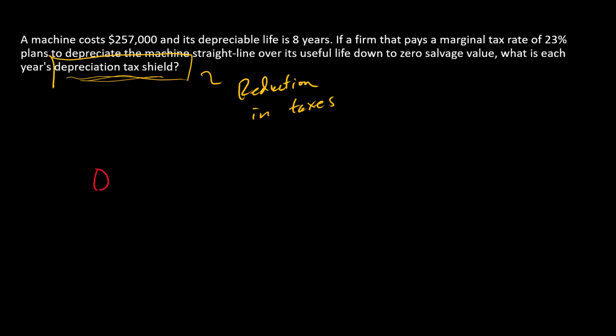It ends up being simply the depreciation amount times the tax rate. So the annual depreciation tax shield is going to be the annual depreciation amount times the tax rate. If we can calculate each of these two, we'll just multiply them together and have the depreciation tax shield.